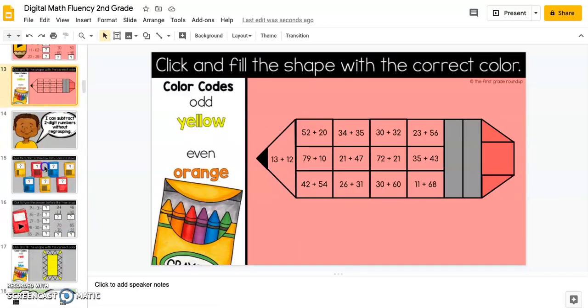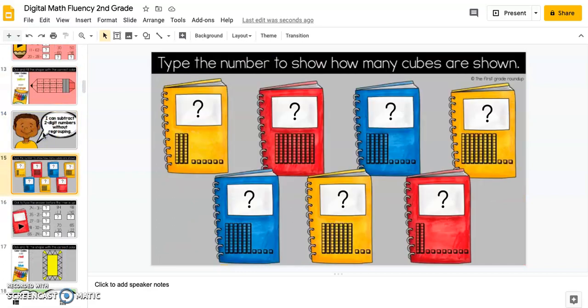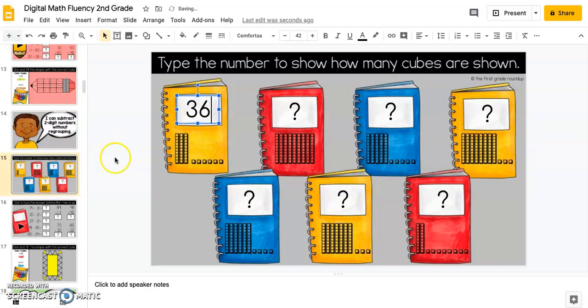A color, a click and fill. There is a click and fill for all of the categories. Then this one, they're going to count how many and click and type.